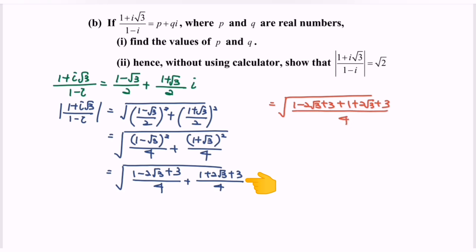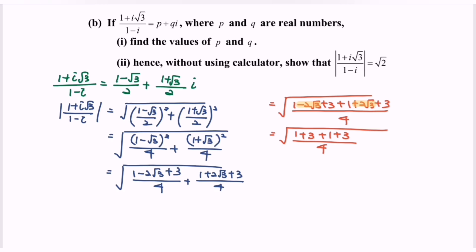As we can see, we can simplify these parts — the -2√3 and +2√3 cancel, becoming 0. We're left with the square root of (1 + 3 + 1 + 3)/4, which is 8/4. So we obtain the square root of 2.